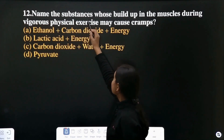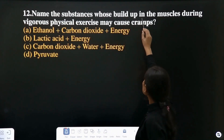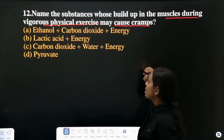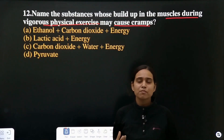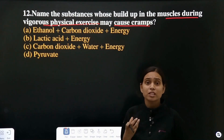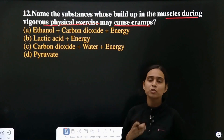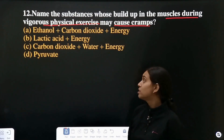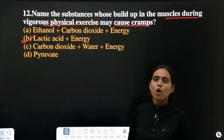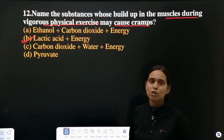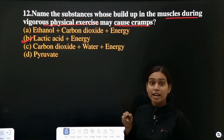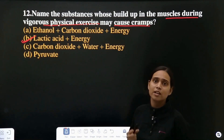Question 12: name the substance whose build-up in muscle cells during vigorous physical exercise may cause cramps. When you exercise a lot, your muscles start getting cramps and pain — that is because of lactic acid. Lactic acid is formed when there is lack of oxygen, and it is because of this lactic acid that cramps occur in your legs.